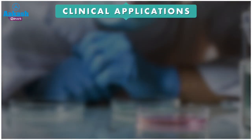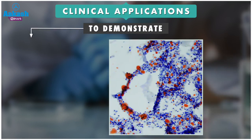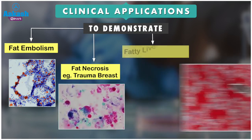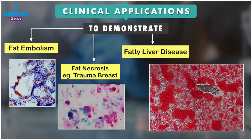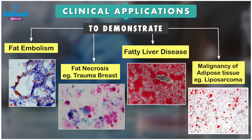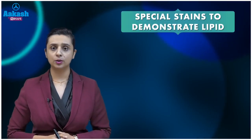The fifth point to remember is the clinical applications of Oil Red O. Number one, it can be used to demonstrate fat embolism. Number two, it can be used to diagnose fat necrosis — for example, in cases of trauma to the breast. It can be used to diagnose fatty liver disease, and it can be used in the demonstration of malignancy of adipose tissue, for example liposarcoma.